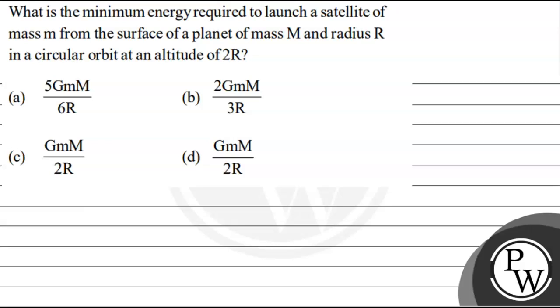Hello, let us read the question first. What is the minimum energy required to launch a satellite of mass m from the surface of a planet of mass M and radius R in a circular orbit at an altitude of 2R?